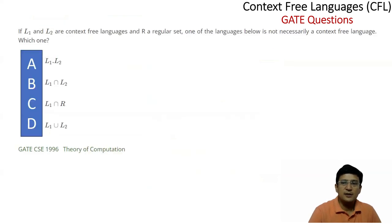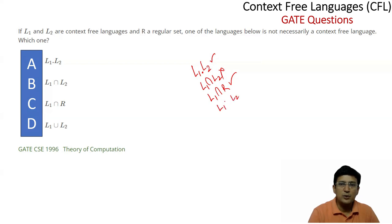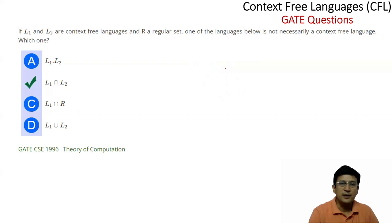Let's take the first question. This is the GATE 1996 question. It says that L1 and L2 are context-free languages and R is a regular set. One of the languages below is not necessarily a context-free language — which one is that? From the table we have seen, concatenation is closed under context-free languages. So the answer involving concatenation is context-free. The correct option is identified accordingly.